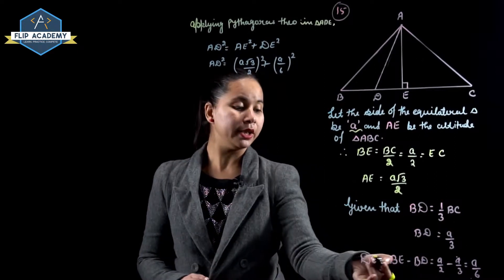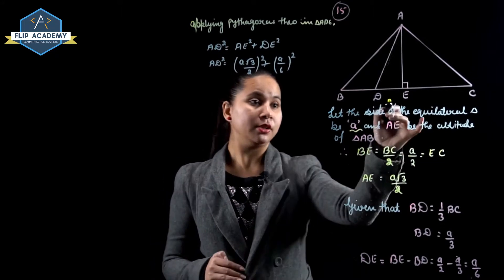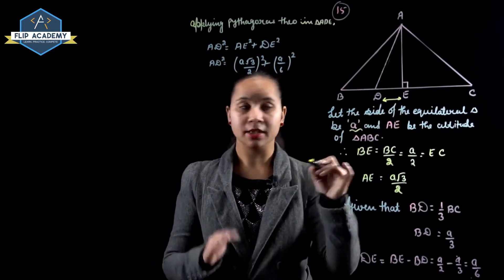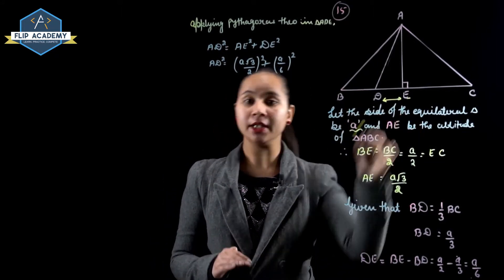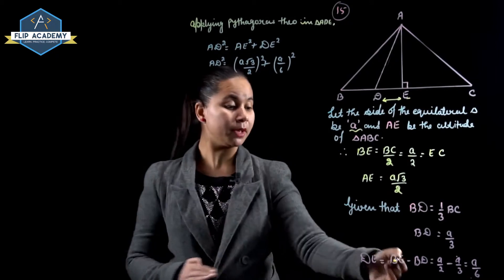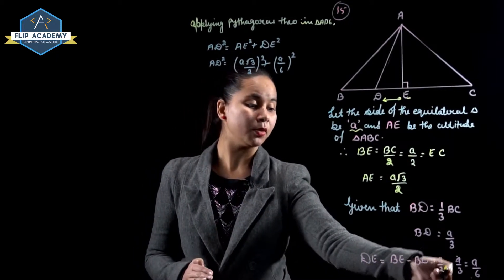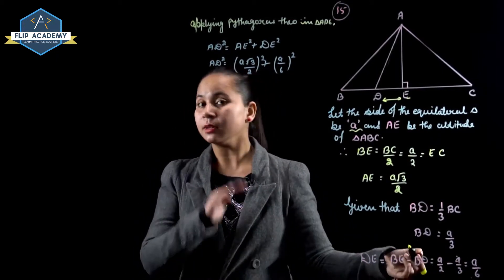Now DE is equal to BE minus BD. So DE equals A/2 minus A/3, which simplifies to A/6.